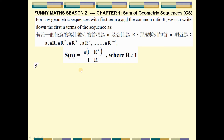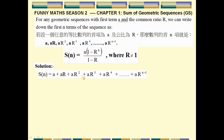Let us start now. Let S_N be the sum of the geometric sequence: A plus AR plus AR squared, and so on, up to the last term AR to the power N minus 1. I label this as equation 1.